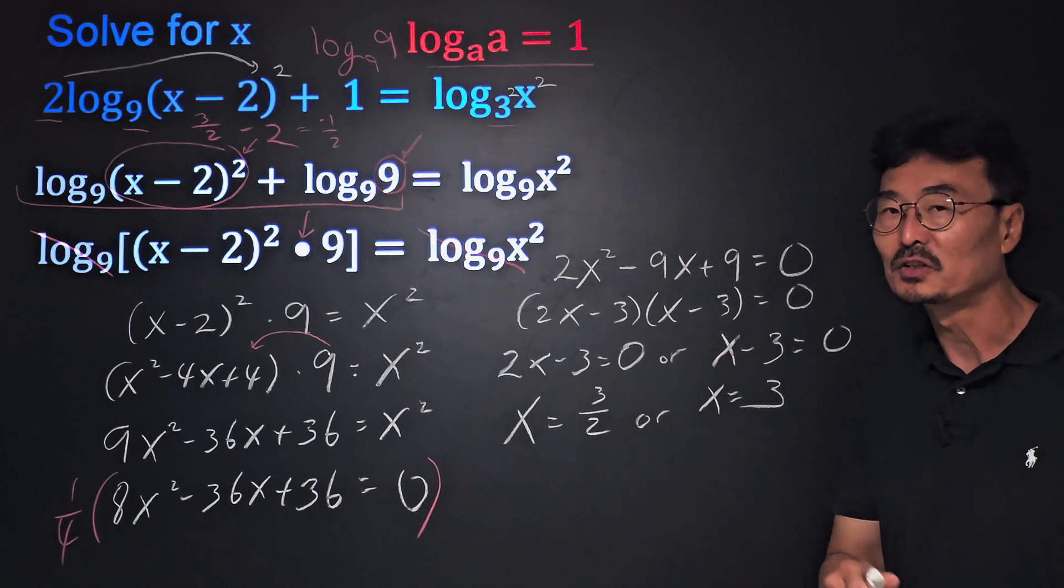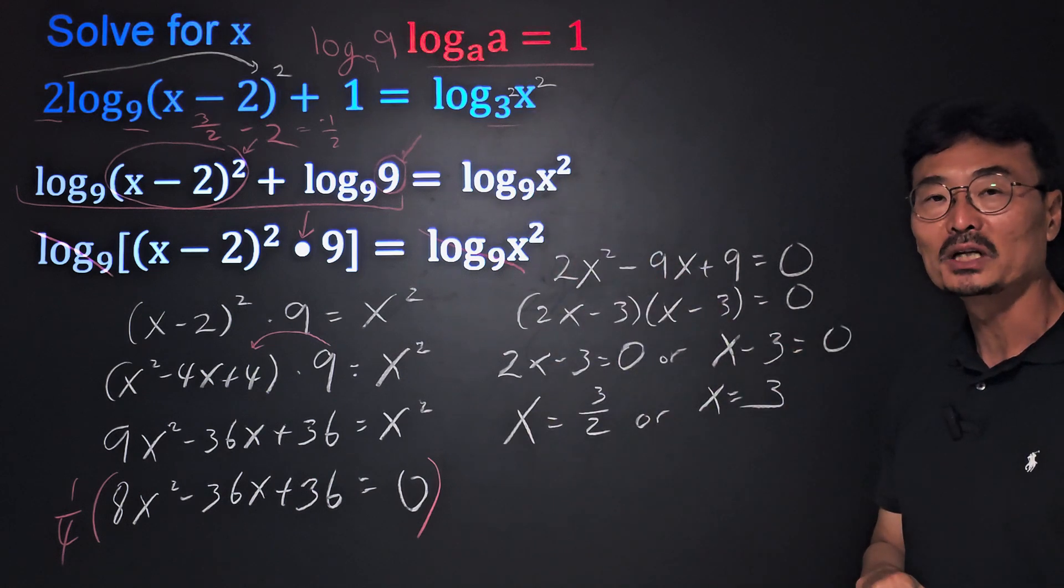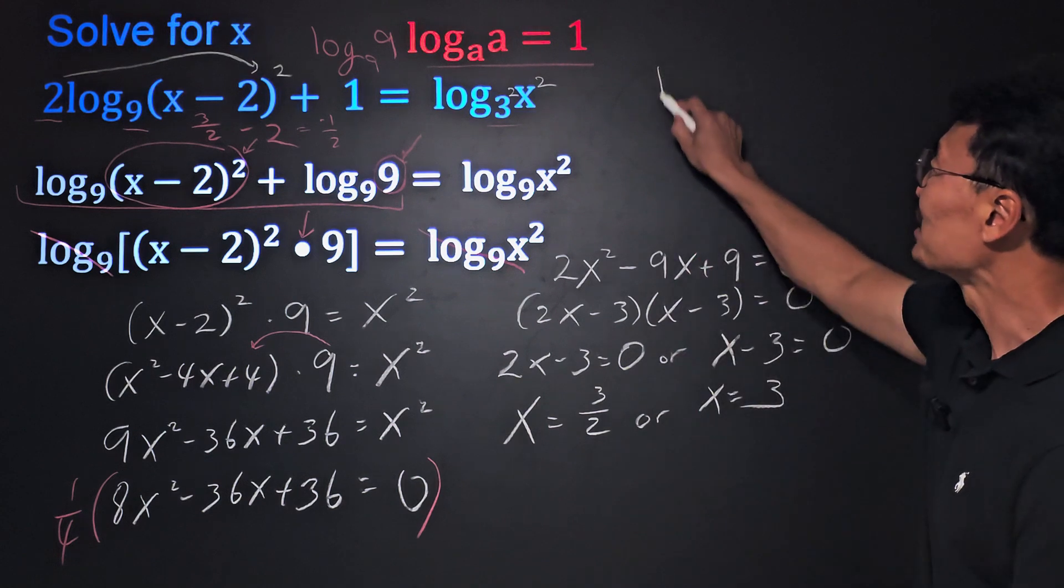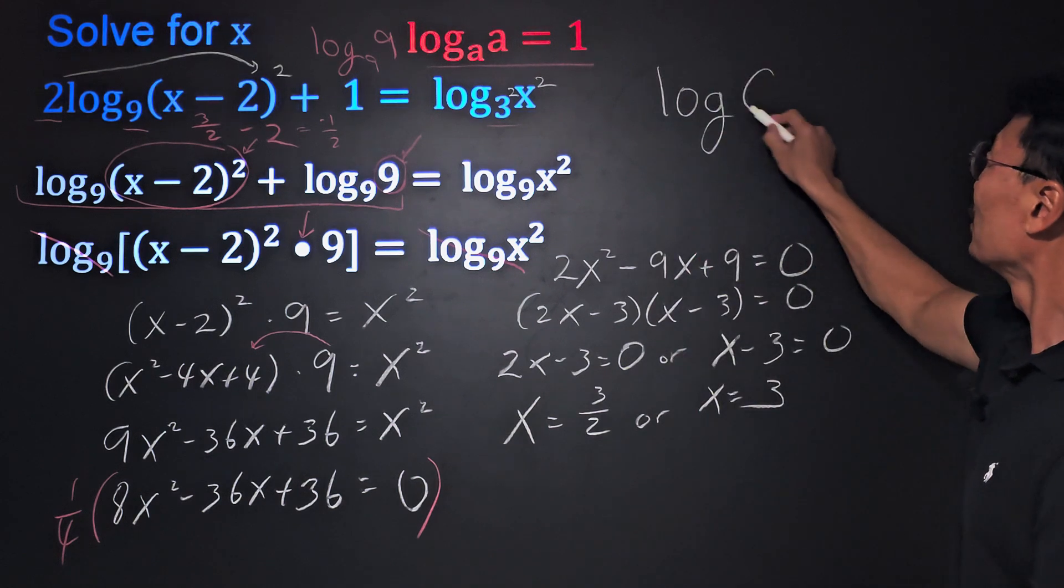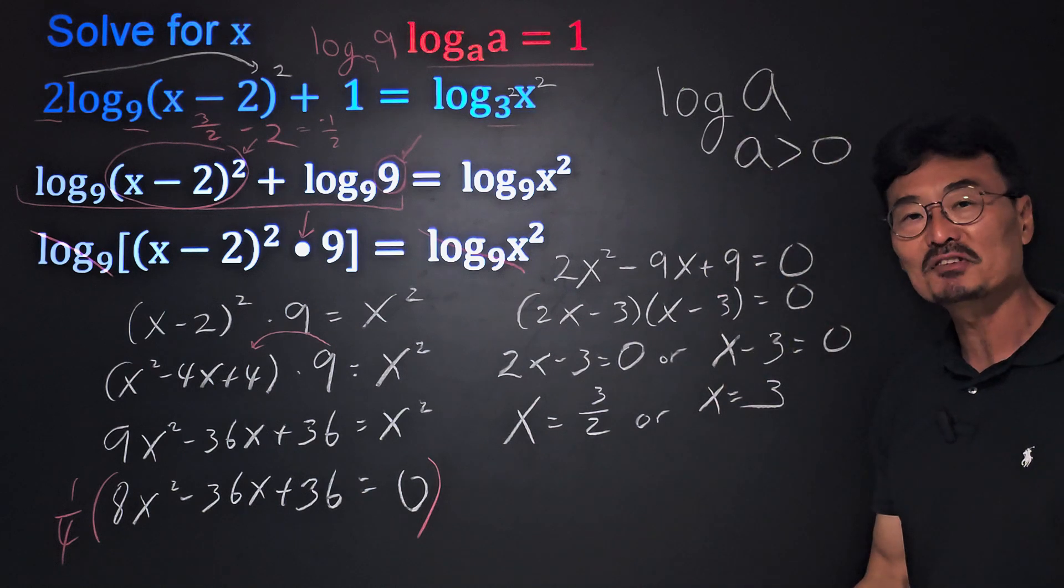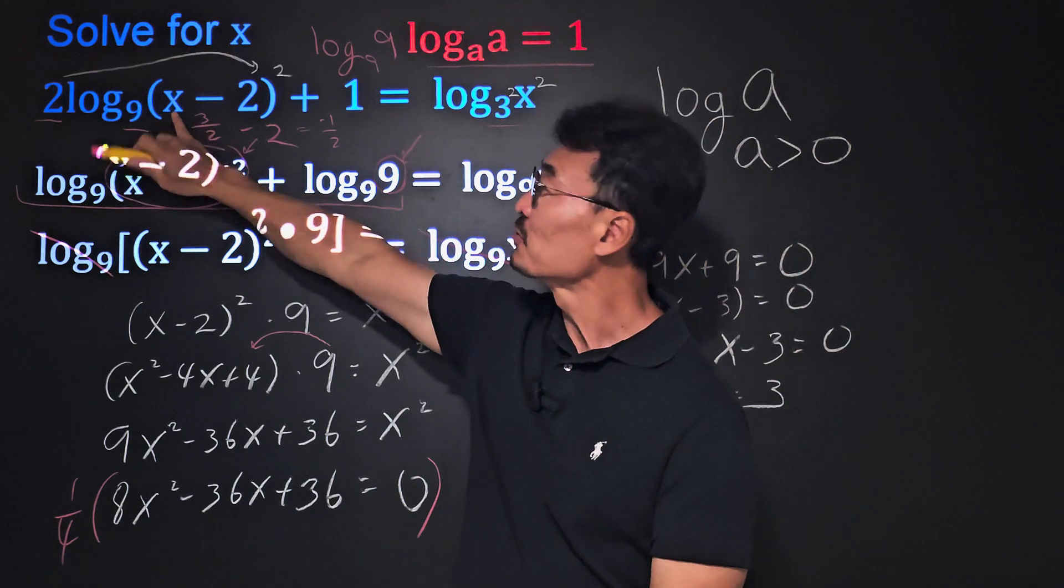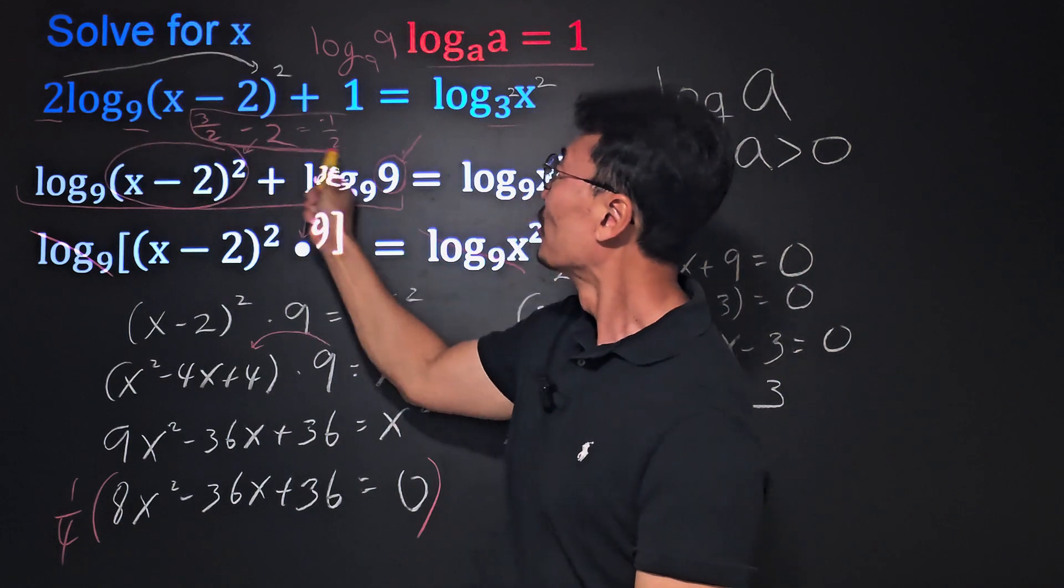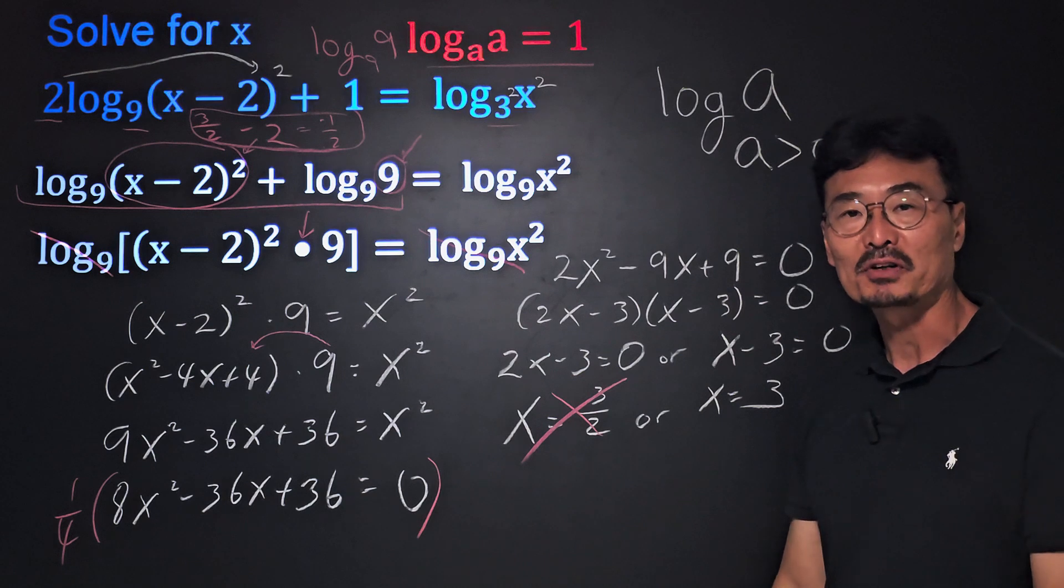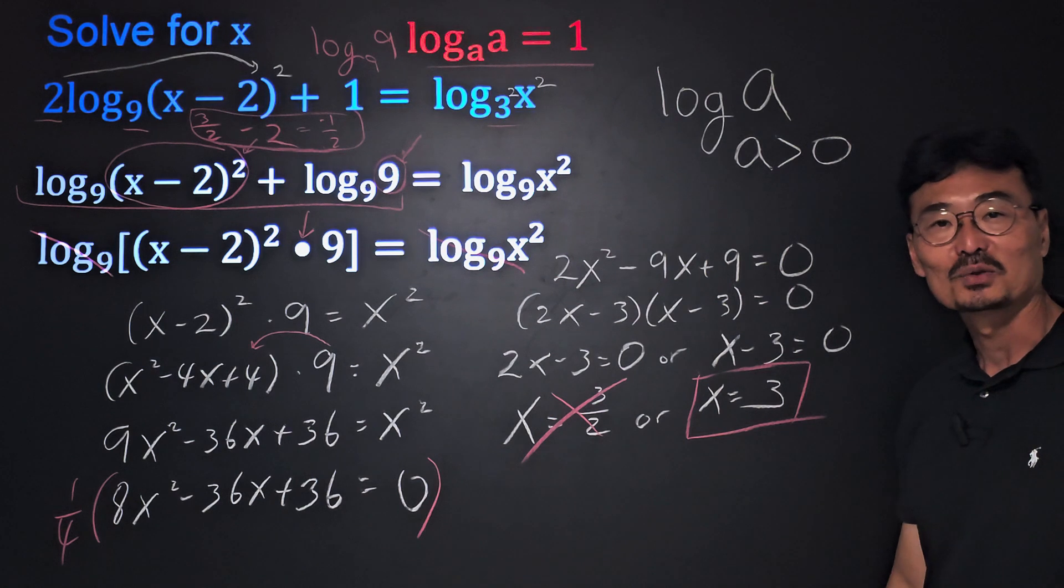You always have to go ahead and check the x values, plug it into the original equation, and make sure we don't get a log that is a negative or a 0. Remember the rule is that if you have log of a, then the argument a must be greater than 0. It can't be 0 or negative. If I take that 3 over 2, plug it in here, the x minus 2, notice we end up getting negative one half, which means that 3 over 2 is not going to be part of our solution, and our final answer will be x equals 3.